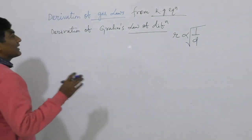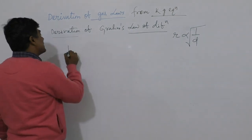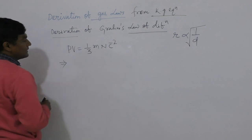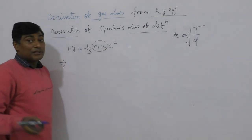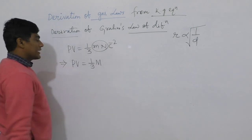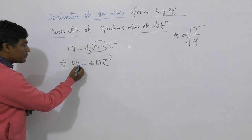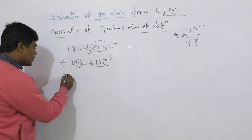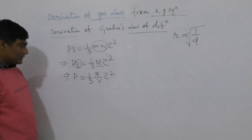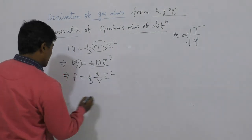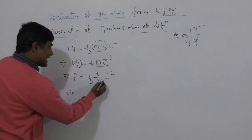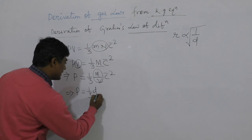We start with PV equals 1 by 3 MNc̄². Since M into N equals capital M, we write PV equals 1 by 3 Mc̄². Bringing volume to the right, P equals 1 by 3 times M by V times c̄². Since M by V is nothing but density D, we get P equals 1 by 3 D c̄².